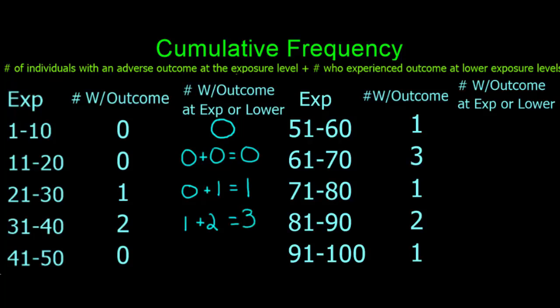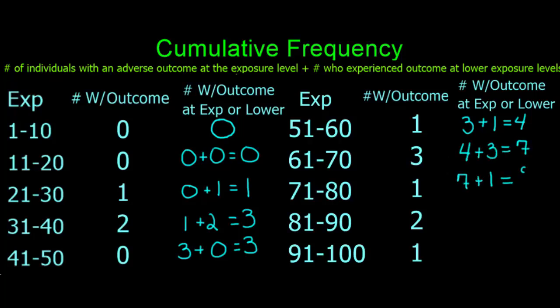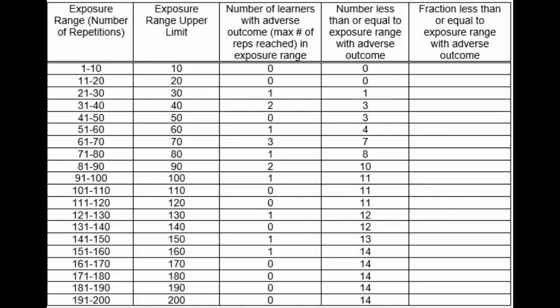After this, we continue to calculate the cumulative number of adverse outcomes for each exposure range: 3 plus 0 equals 3; 3 plus 1 equals 4; 4 plus 3 equals 7; 7 plus 1 equals 8; 8 plus 2 equals 10; and 10 plus 1 equals 11. The final result of each exposure range's cumulative total is shown here in the fourth column.